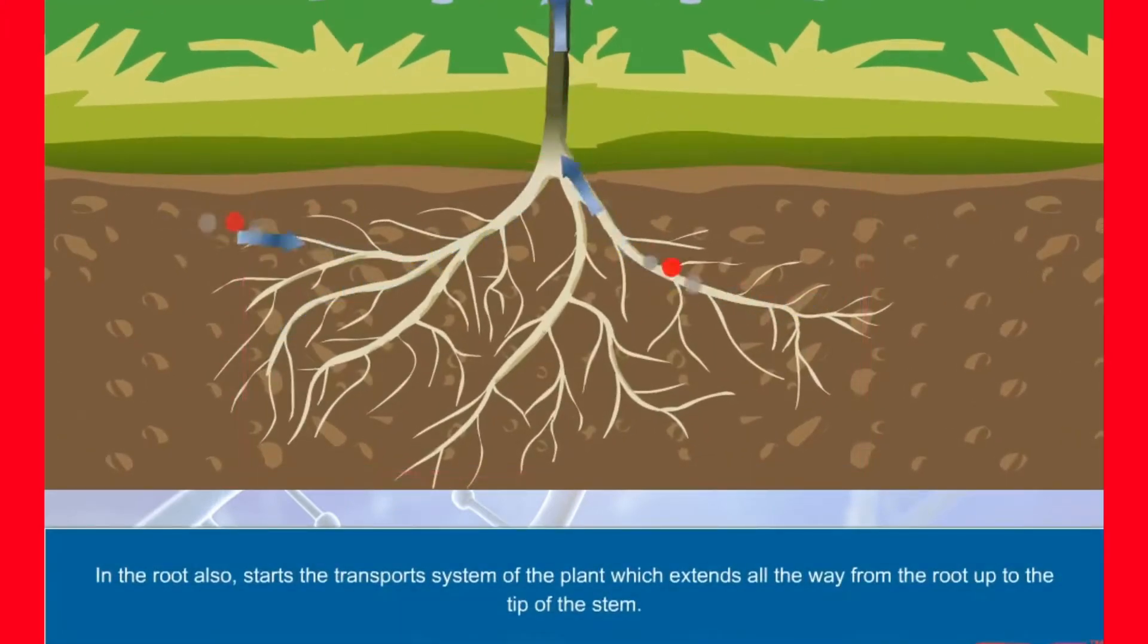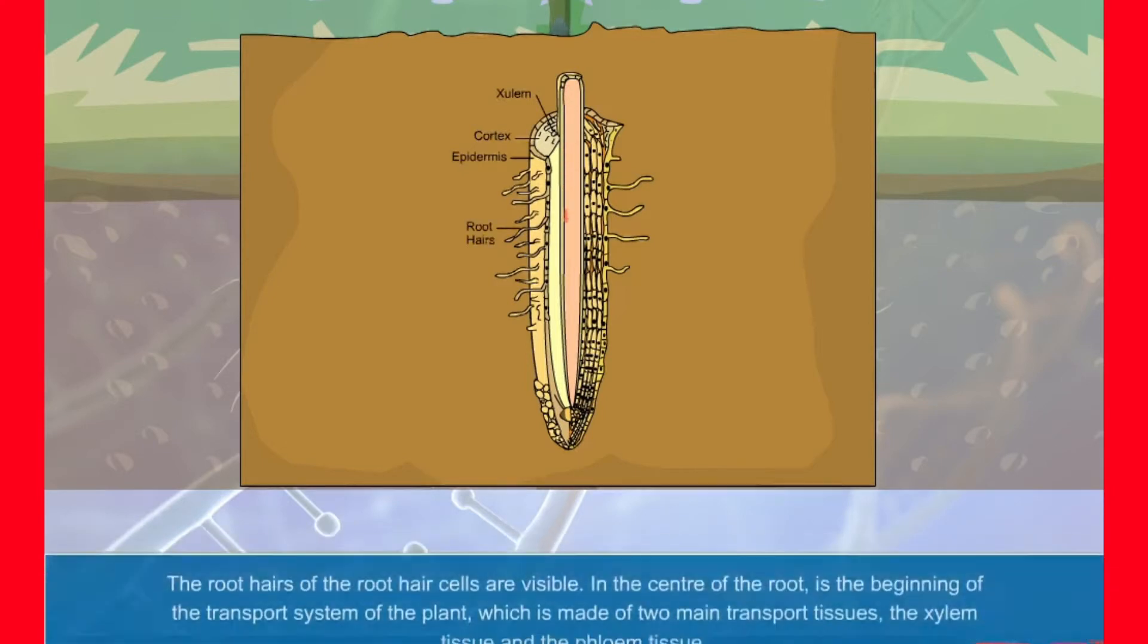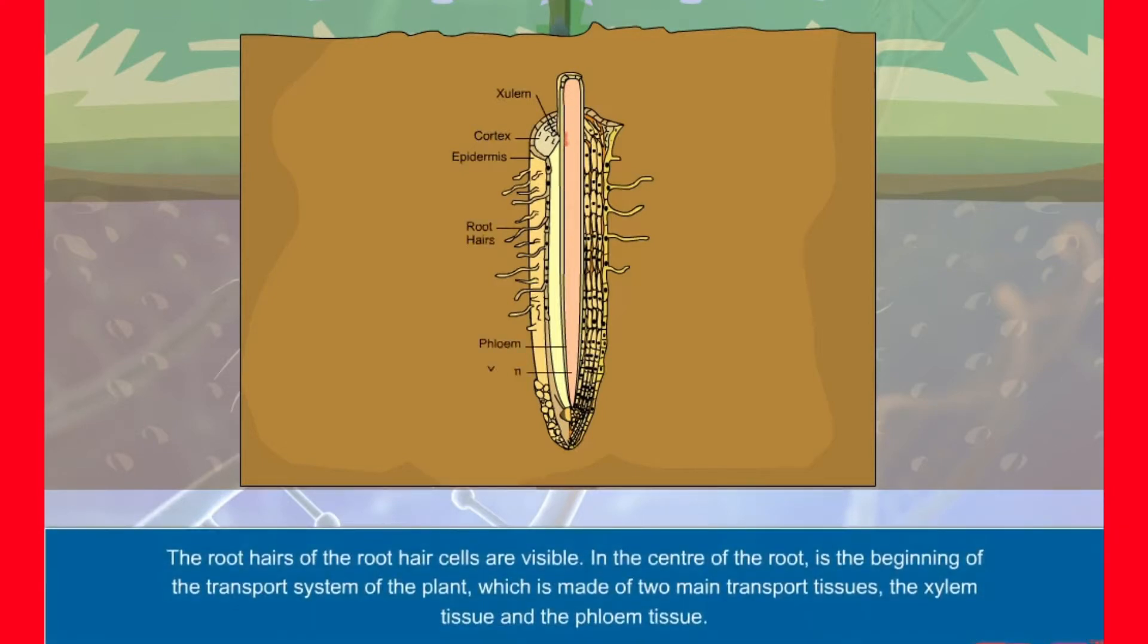In the root also starts the transport system of the plant which extends all the way from the root up to the tip of the stem. The root hairs of the root hair cells are visible. In the center of the root is the beginning of the transport system of the plant which is made of two main transport tissues, the xylem tissue and the phloem tissue.